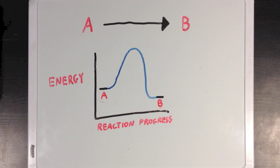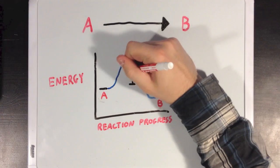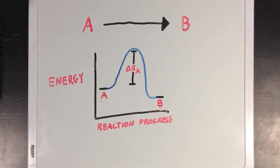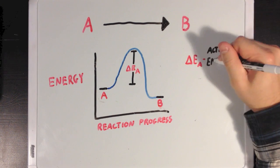So looking at this graph, you'll notice that the energy of molecule A will rise up pretty high and then drop all the way down to the energy of molecule B. And we can actually define a couple of values from this graph. So the difference between the energy level where we start and the top of our graph is what we call the delta Ea, or the activation energy.